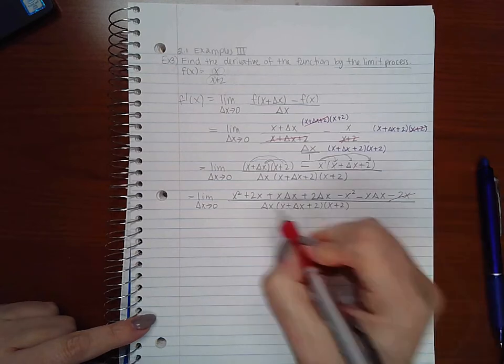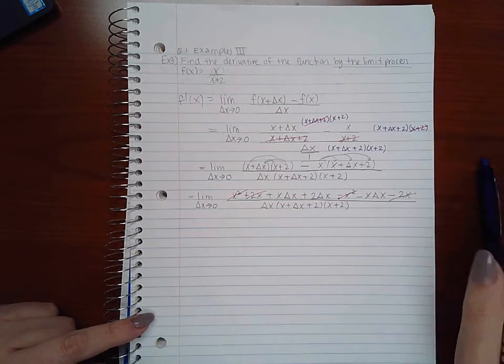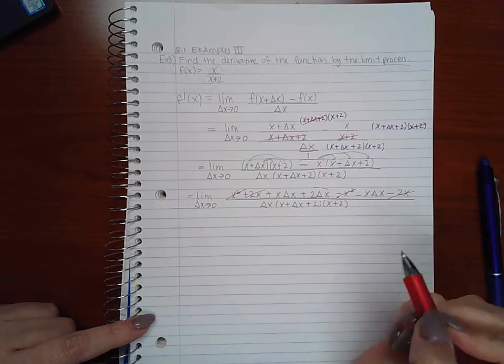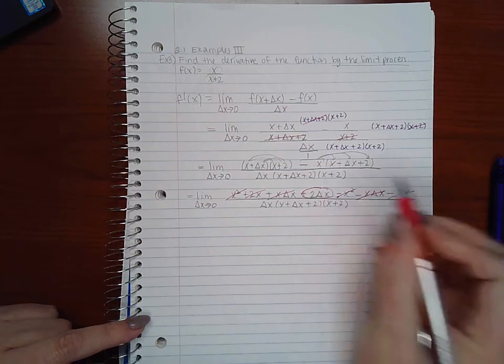So then negative 2x and 2x, negative x squared and x squared, and these do cancel out as well. I'm only left with this 2 delta x term.